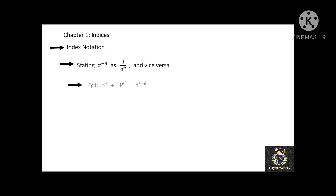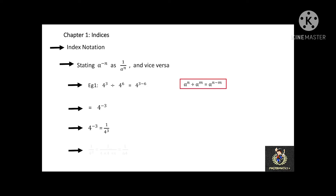See this example. 4 to the power of 3 divided by 4 to the power of 6 is equal to 4 to the power of 3 minus 6, which results in a negative index: 4 to the power of negative 3. To find the value, 4 to the power of negative 3 can be stated as 1 over 4 to the power of 3. 4 to the power of 3 equals 4 times 4 times 4, which is 64. Then 4 to the power of negative 3 is equal to 1 over 64.